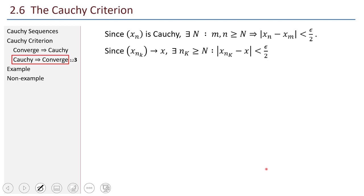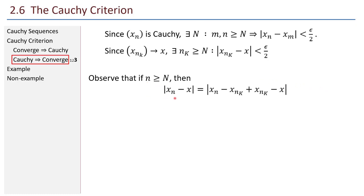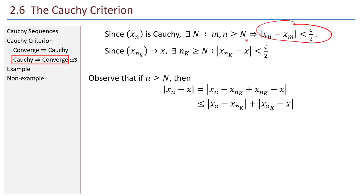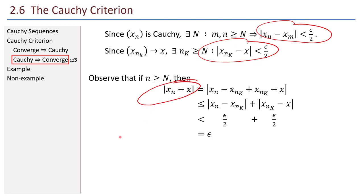Now we're getting close. If little n is greater than or equal to N, then for x sub n minus x, I can subtract and add a term of the subsequence, then break it apart using the triangle inequality. Each piece was less than epsilon over 2, so adding them together gives epsilon. That proves that the original sequence converges to x.